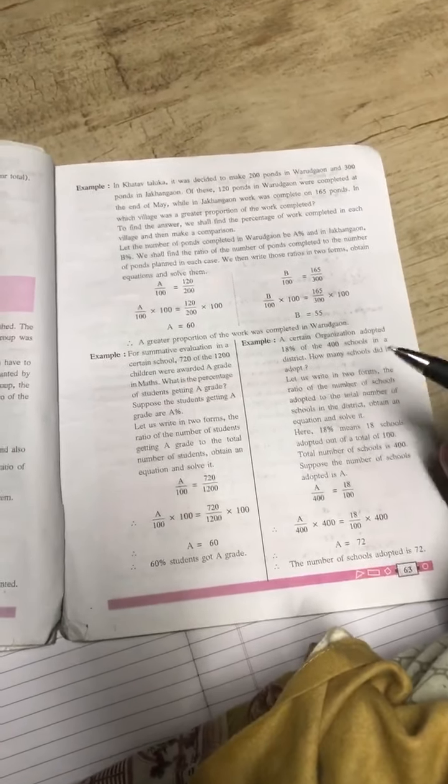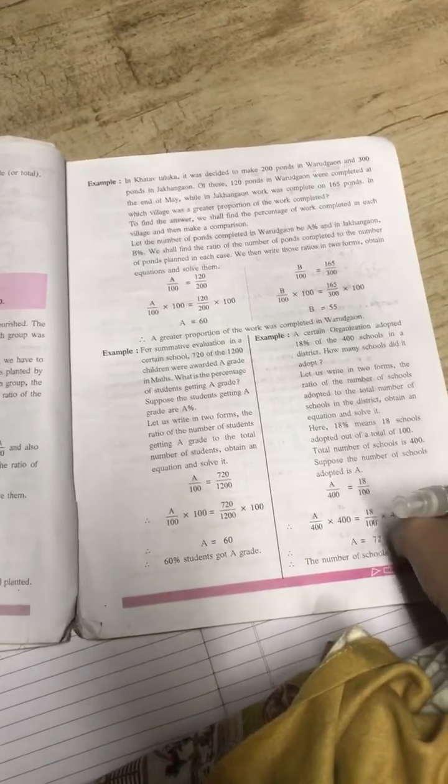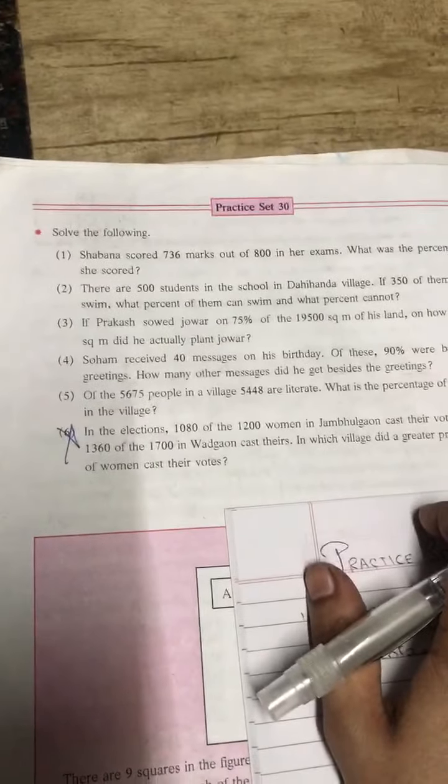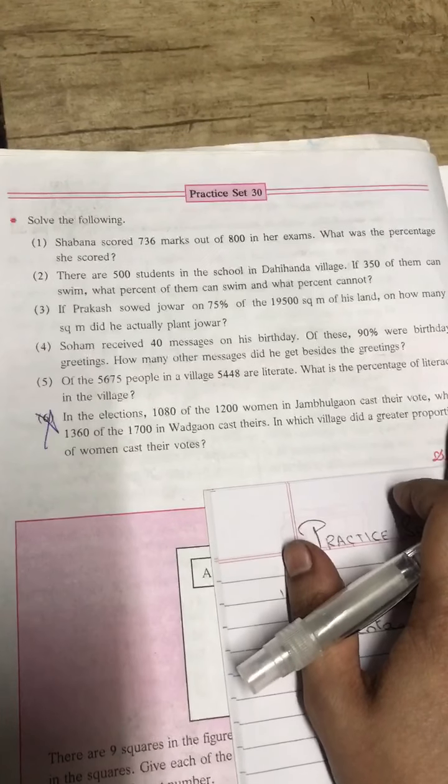Same way here one more example on page number 63 is given. This examples are basically examples of the sum that are there in practice set 30. So now I will explain practice set 30 for some to you students. Like this only you have to solve practice set 30 for some also. Now I'll solve the first sum for you students.